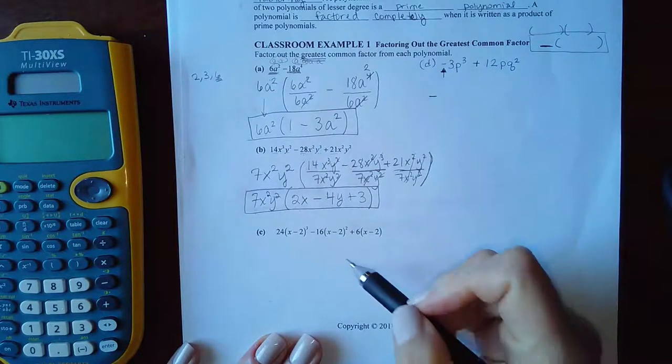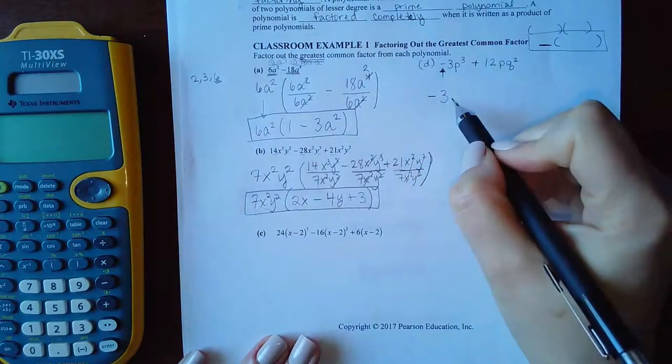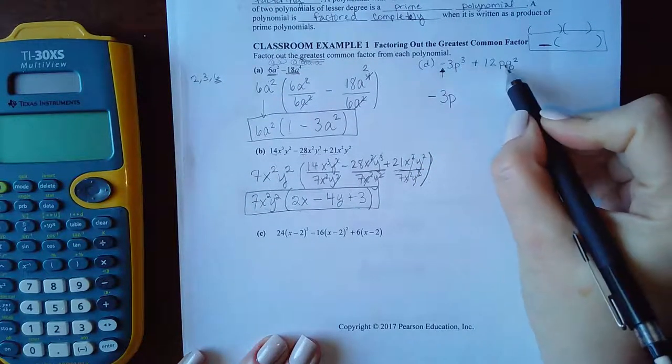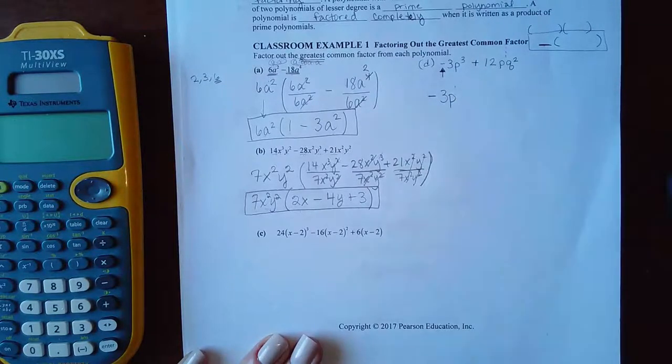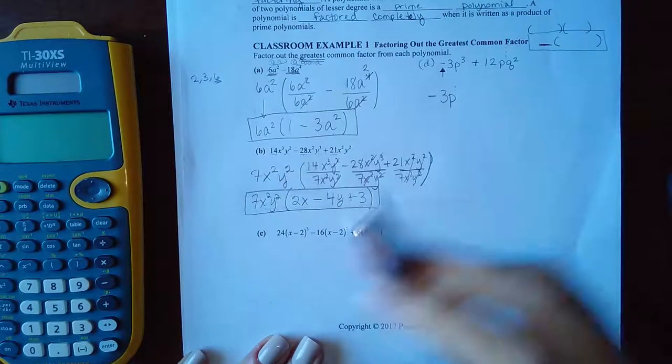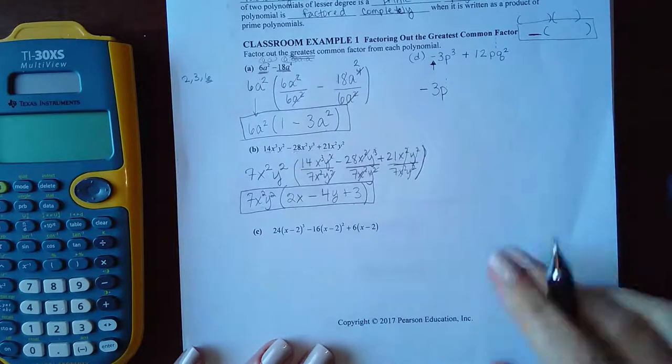Then you can look at those and decide, oh, they can both be divided by three and they both have a P. Although this one has three, this one only has one. So the most you could take out is one.